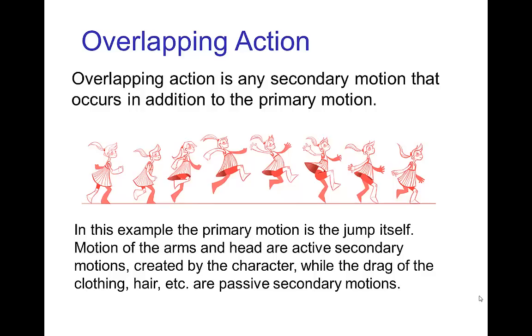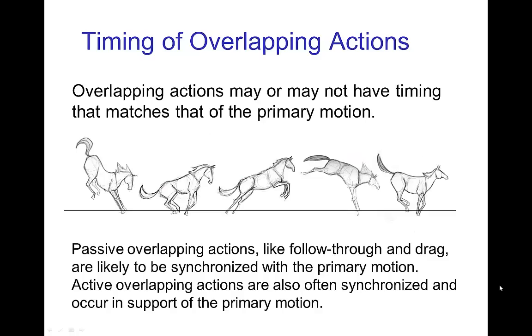So for example, if a character is jumping, then the primary motion would be the jump itself and then the motion of the arms and maybe the head would be what I'd call active secondary motion, which is animated by the character, while there are also passive secondary motions such as the drag of the clothing, the hair, so forth.